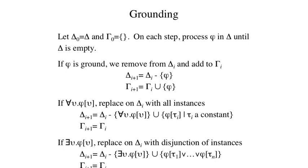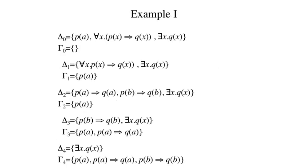Set gamma at that point is the grounding of the input. The first rule covers the case when the sentence being processed is ground. In this case, we remove the sentence from delta and add it to gamma.